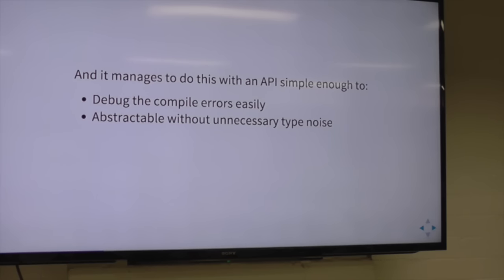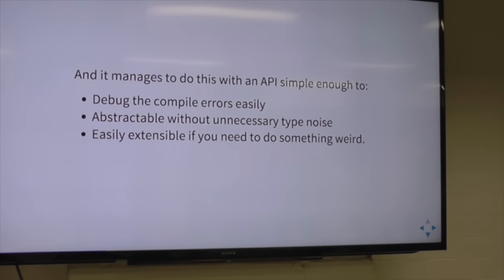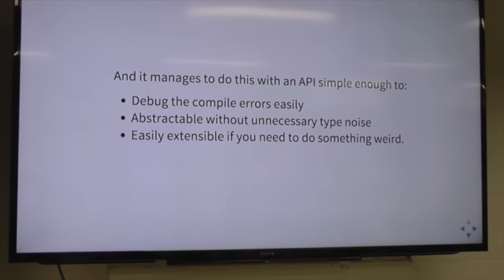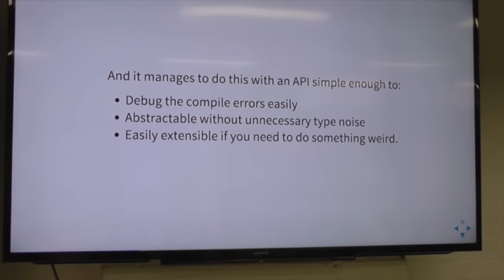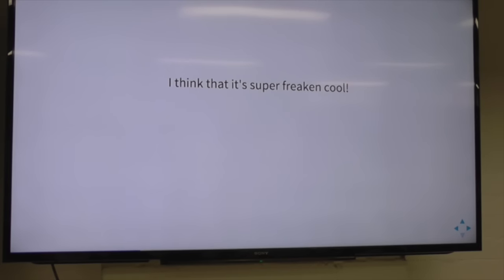It's abstractable without any unnecessary type noise. If you've tried to be abstractive with Persistent, all the type class constraints over every field get very crazy very quickly. Opaleye doesn't suffer from this, which is great. And it's easily extensible to generate new bits of SQL if you need to do something weird. I've done a big tutorial and code example that works and is runnable. I implemented the `now` function for dates, and it's really simple — actually pretty easy.